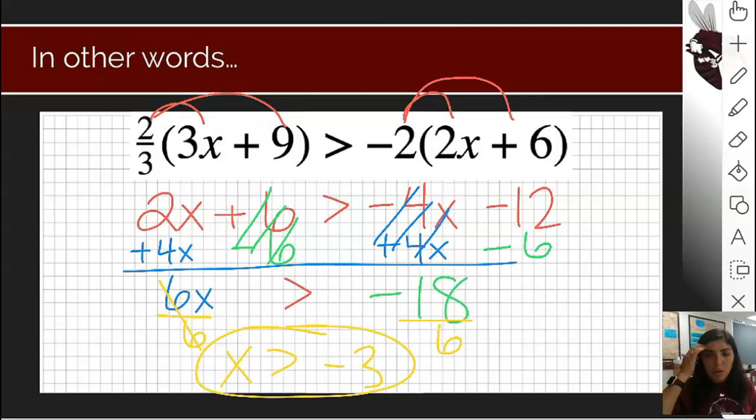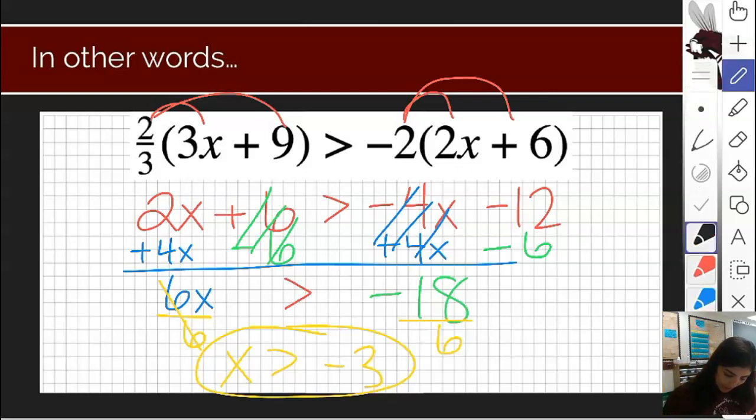There is one important note to make when we're dealing with inequalities, and it's the only change from equations that we have to deal with. If by chance we have at the end of an equation, let's say negative 2x greater than 10, you tell me that to isolate the x, we would divide by negative 2. When we divide or multiply by a negative when we're dealing with inequalities, we get an extra step. This is the only difference.